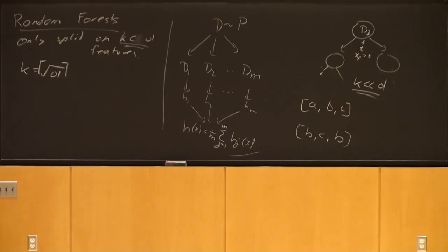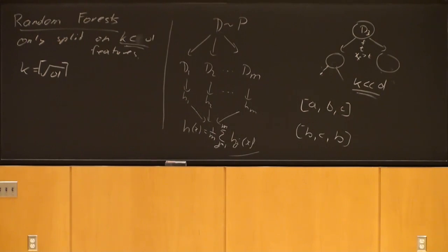Random forests work really well in high-dimensional data and are surprisingly resilient against the curse of dimensionality, because you never compute distances in high-dimensional space unlike, say, the RBF kernel. It gets slower in high-dimensional spaces but still works pretty well.